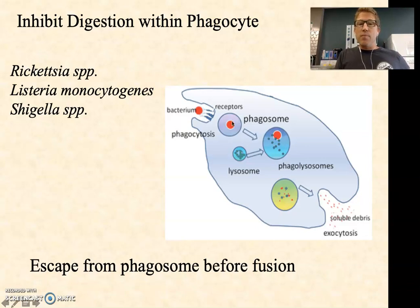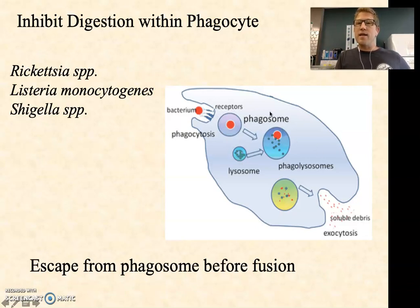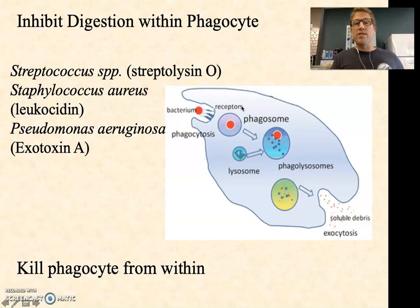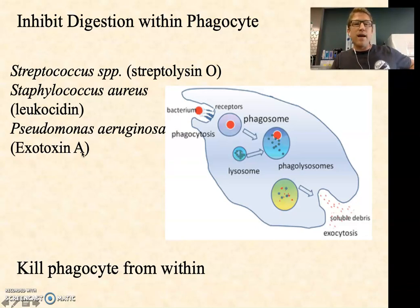Sometimes the phagosome is brought in, and before it fuses with the lysosome, bacteria like Shigella, Listeria, or Rickettsia can actually escape from the phagosome — they bust their way out, and now they're free in the cytoplasm of the phagocyte where they can kill it, grow and divide, and eat their way out. Other times, bacteria try to kill the phagocyte before fusion ever occurs. Streptococcus species carry a hemolytic toxin called Streptolysin O that, if they get eaten by a phagocyte, they can secrete to kill the phagocyte. Staph aureus has a similar one called leukocidin — leuko meaning white blood cell, cidin meaning killing. Pseudomonas aeruginosa, a gram negative, has Exotoxin A that can kill the phagocytic white blood cell before it can ever kill the pseudomonas.